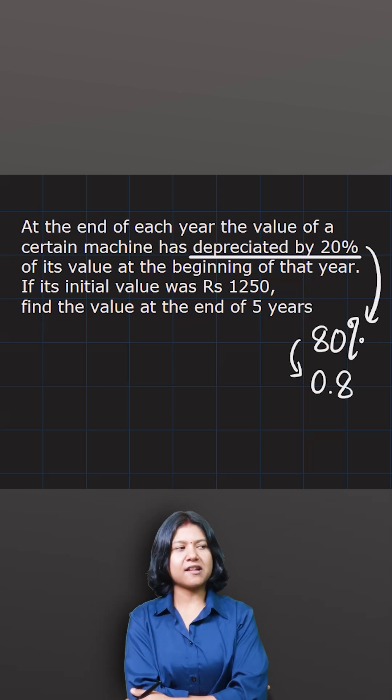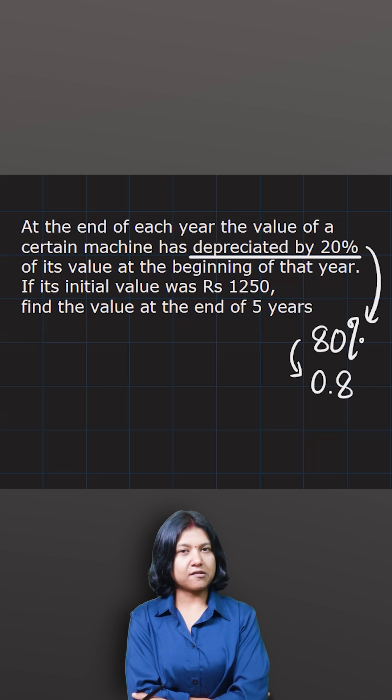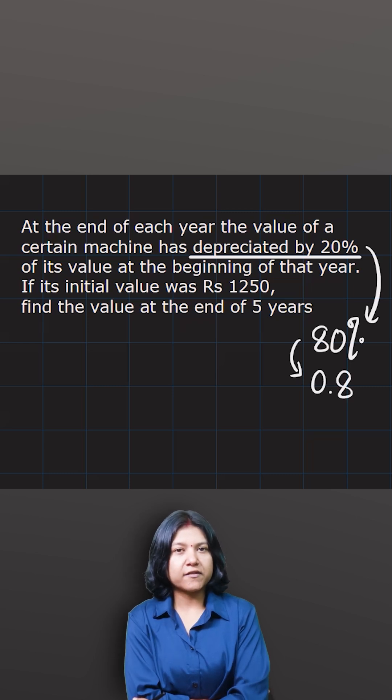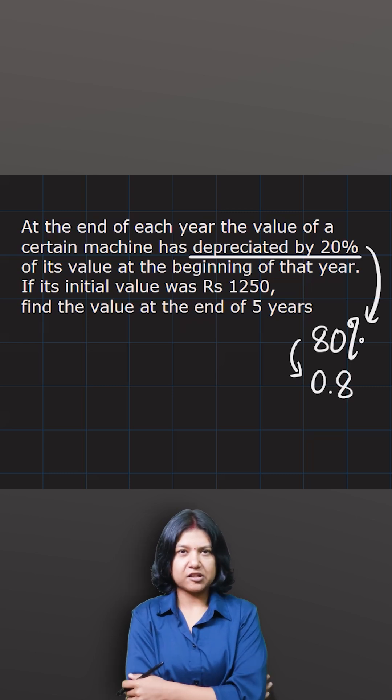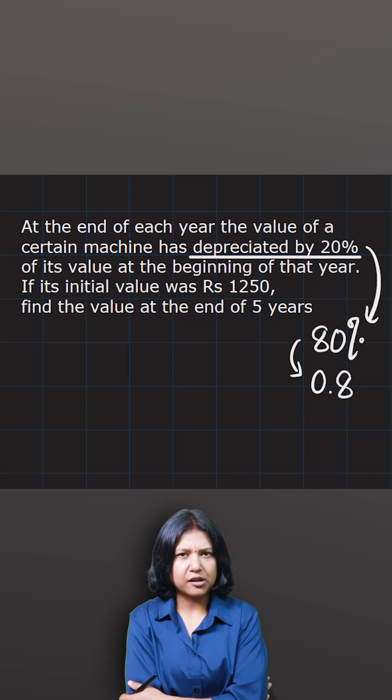Now understand the question is asking you to find the value at the end of five years. So what kind of sequence is this? Or where does this question even come from? Is it from a percentage? Is it from some kind of sequence?